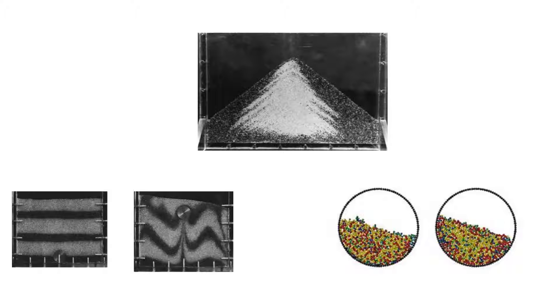Segregation of fine particles can occur whenever a free-flowing powder composed of a range of particle sizes is disturbed, causing rearrangement of particles. This can happen during stirring, shaking, vibration, or when pouring into a heap.